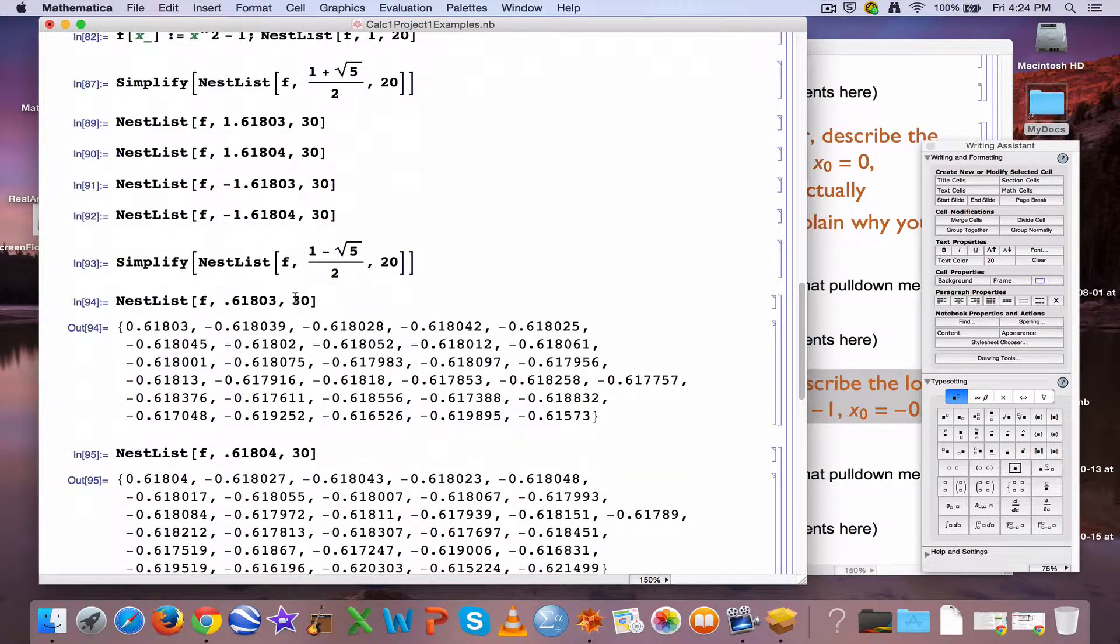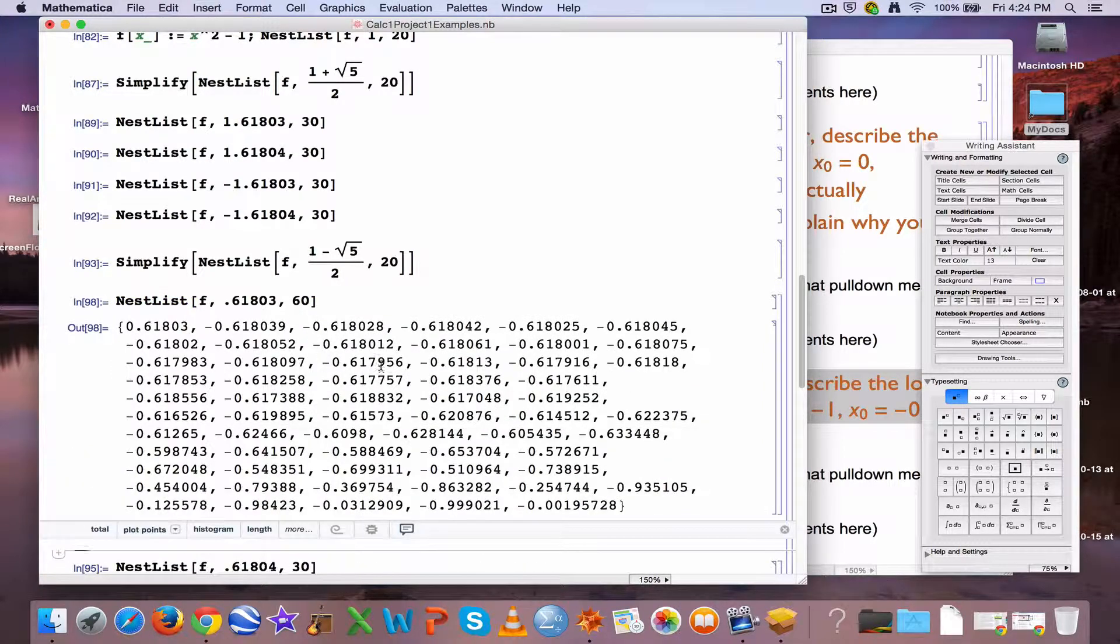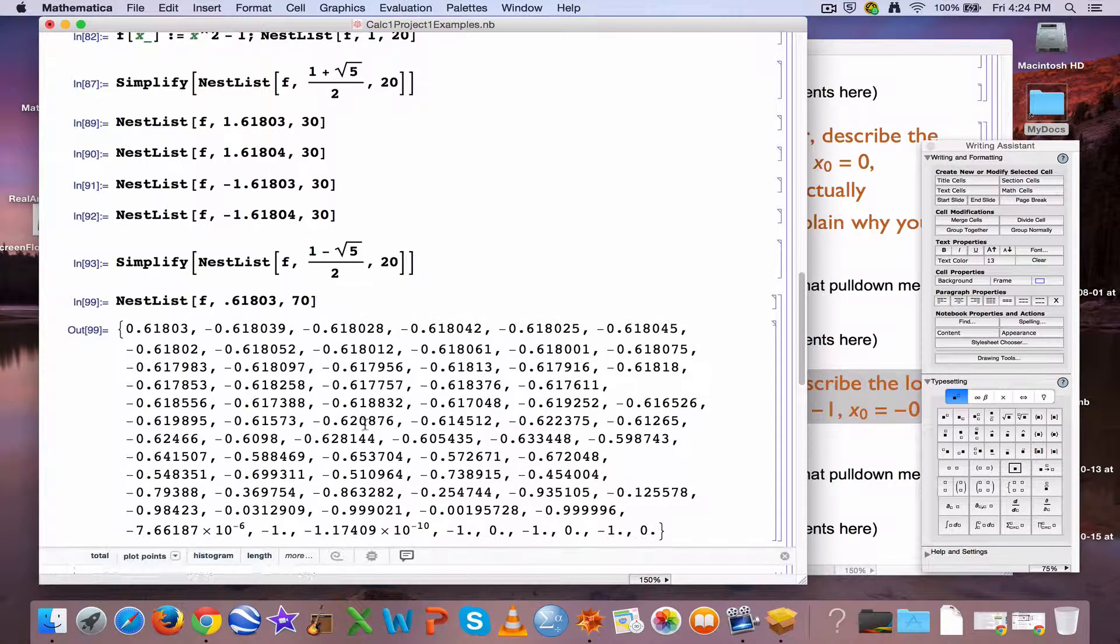Okay, so let's go past 30 iterations now. Let's go, say, to 50 or 60. Okay, it looks like we're eventually approaching the cycle of period 2 for this one.